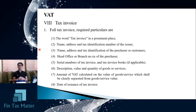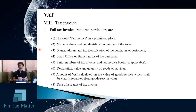The full tax invoice has mandatory required elements that must be present. The first is the word 'tax invoice.' The second is the name, address, and tax identification number of the issuer. The third is the name, address, and tax identification of the customer or purchaser. The fourth is the designation indicating head office or branch of both the purchaser and the seller.